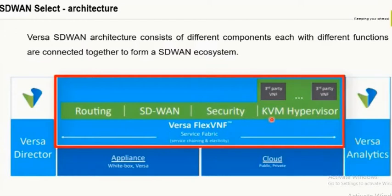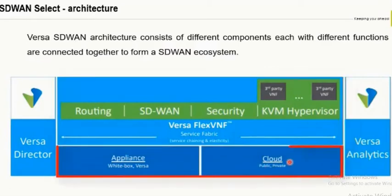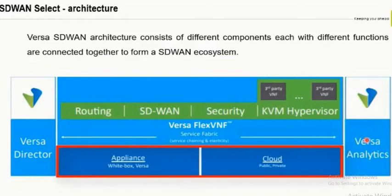One deployment option is on bare metal — essentially equivalent to a Cisco router — or on a VM, which can be a KVM-based hypervisor or an ESXi-based hypervisor. As you can see, there are two deployment options: Appliance and Cloud. You can also deploy these VMs in AWS, Azure, or Google Cloud.